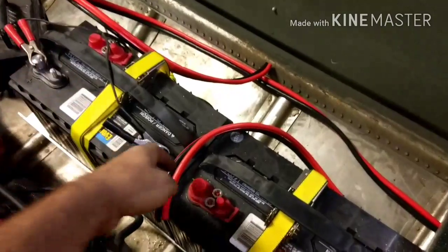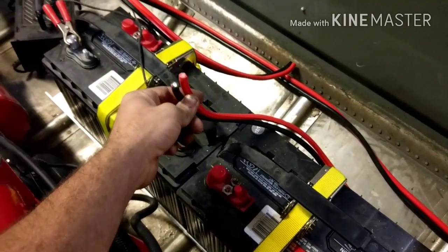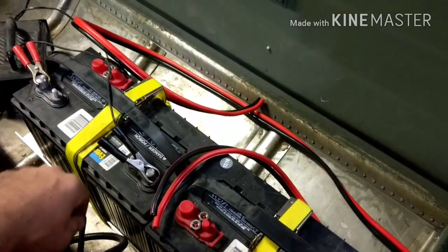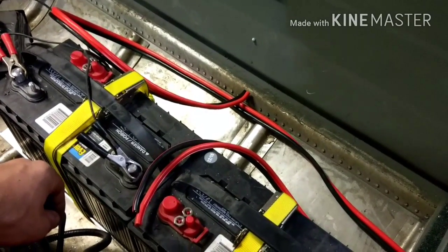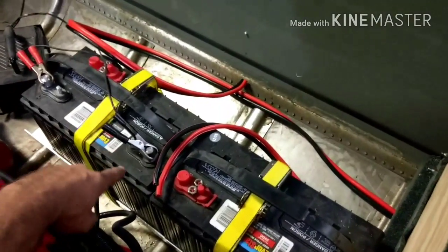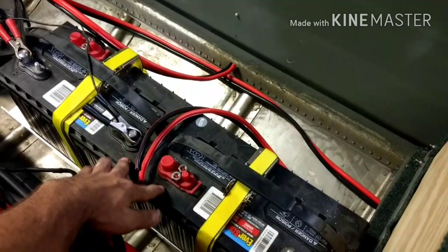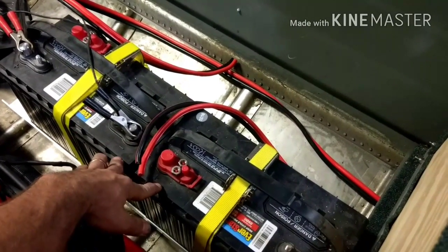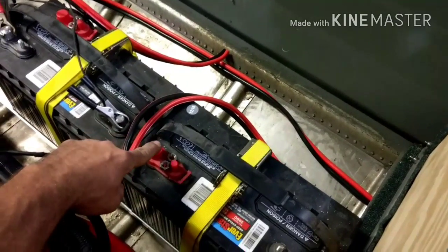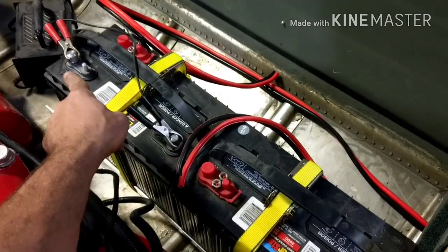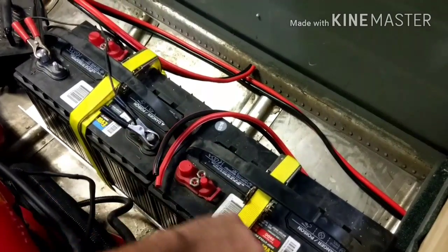All right, so we have the jumper cables ends cut off and the wires ran to their locations. So the plan with these batteries is to hook them up in parallel. And to hook that up in parallel, what you're going to do is you're going to run the positive to the positive and the negative to the negative.